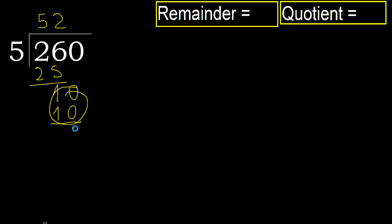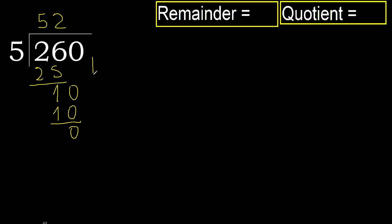Subtract to get 0. Next digit is 0, subtract again. That is not a number, therefore finish.